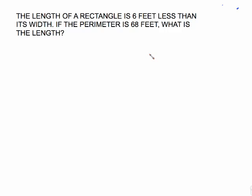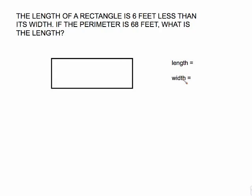Problem 2: The length of a rectangle is 6 feet less than its width. If the perimeter is 68 feet, what is the length? Same setup — draw your rectangle, name your variables. The dimension you're told nothing about is width, so width is the plain old variable W. Translating: the length is 6 less than the width, so length equals W minus 6. Label the picture: width sides get W, length sides get W minus 6.